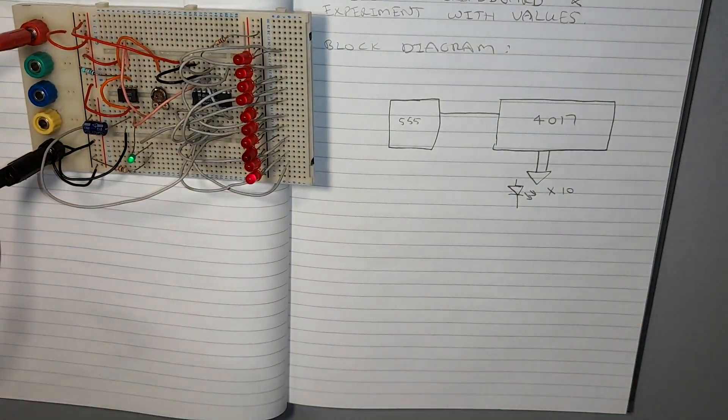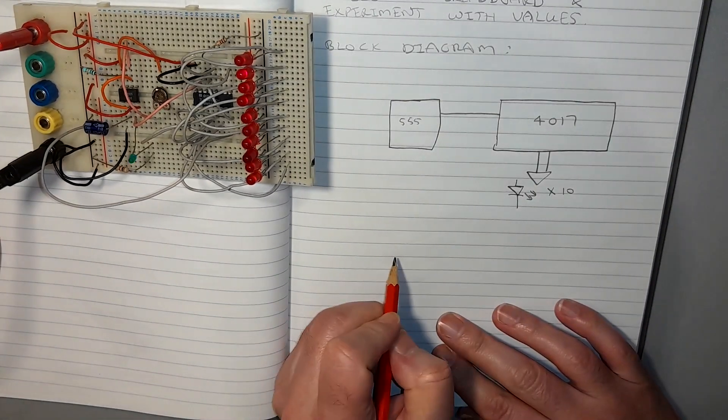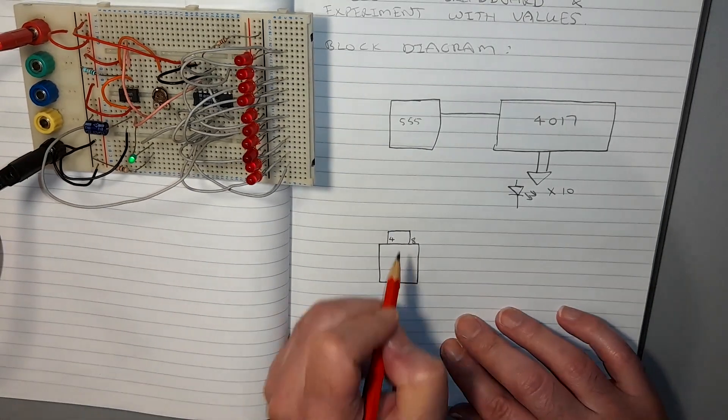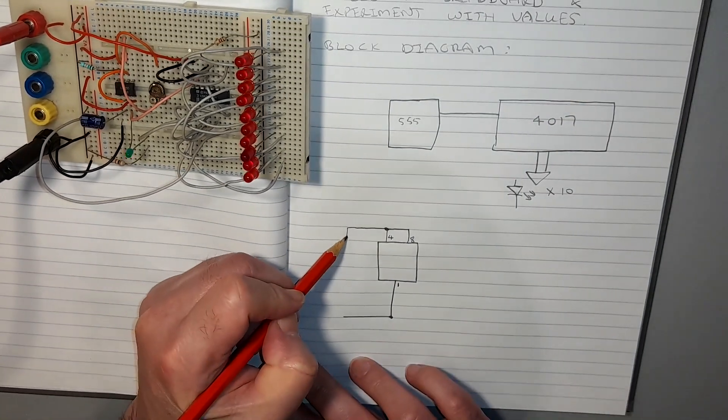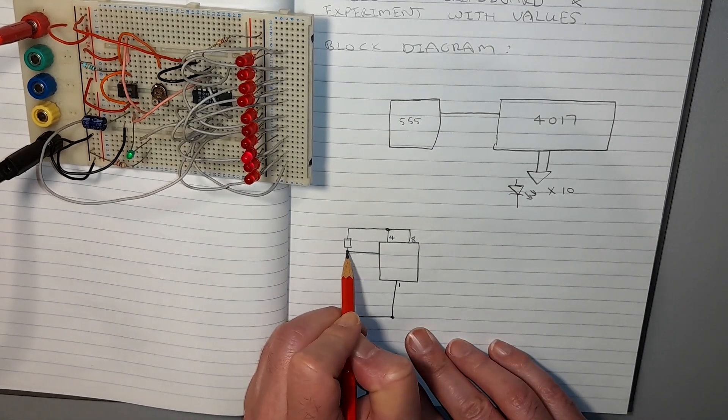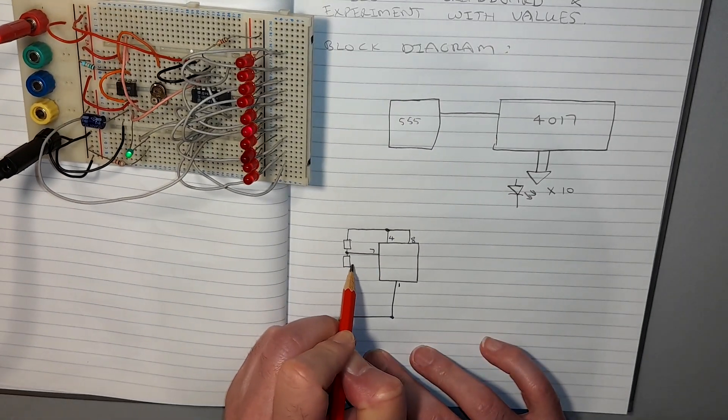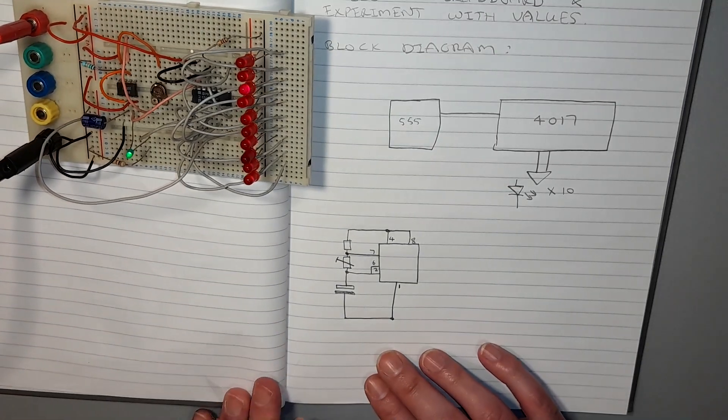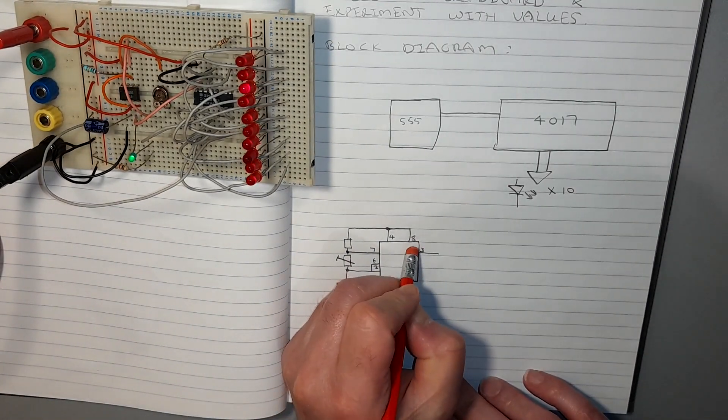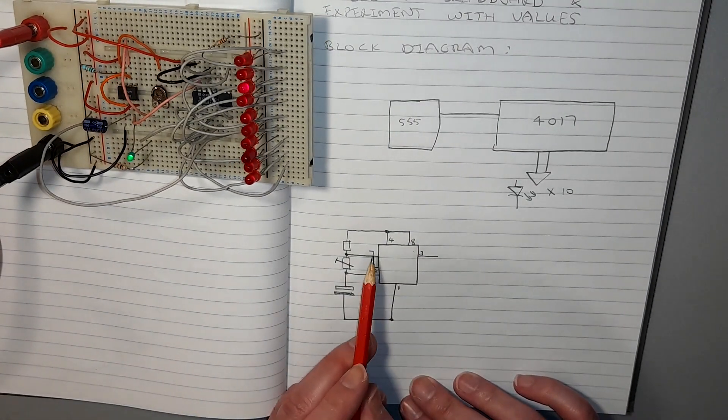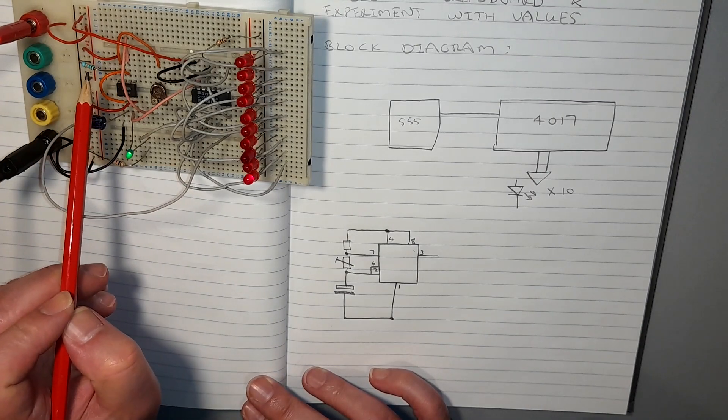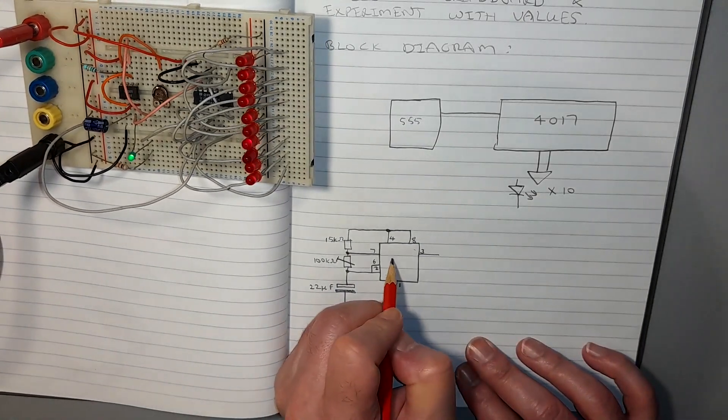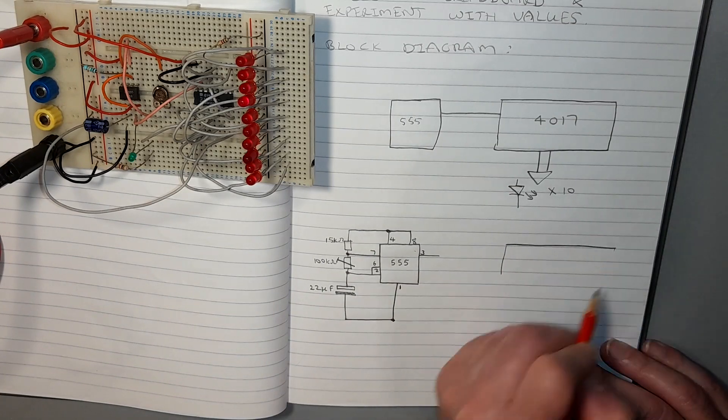All that remains now is to document it. Let's draw the full circuit diagram. The 555 has pins 8 and 4 to positive and pin 1 to negative. A 15 kilo ohm resistor connects from positive to pin 7. From pin 7 to pin 6 we have a 100 kilo ohm preset resistor. Pins 6 and 2 are connected together. From pins 6 and 2 we place the positive end of a 22 microfarad electrolytic capacitor whose negative end goes to the negative of the circuit. The output comes out on pin 3 from the 555 which then connects to pin 14 of the 4017.